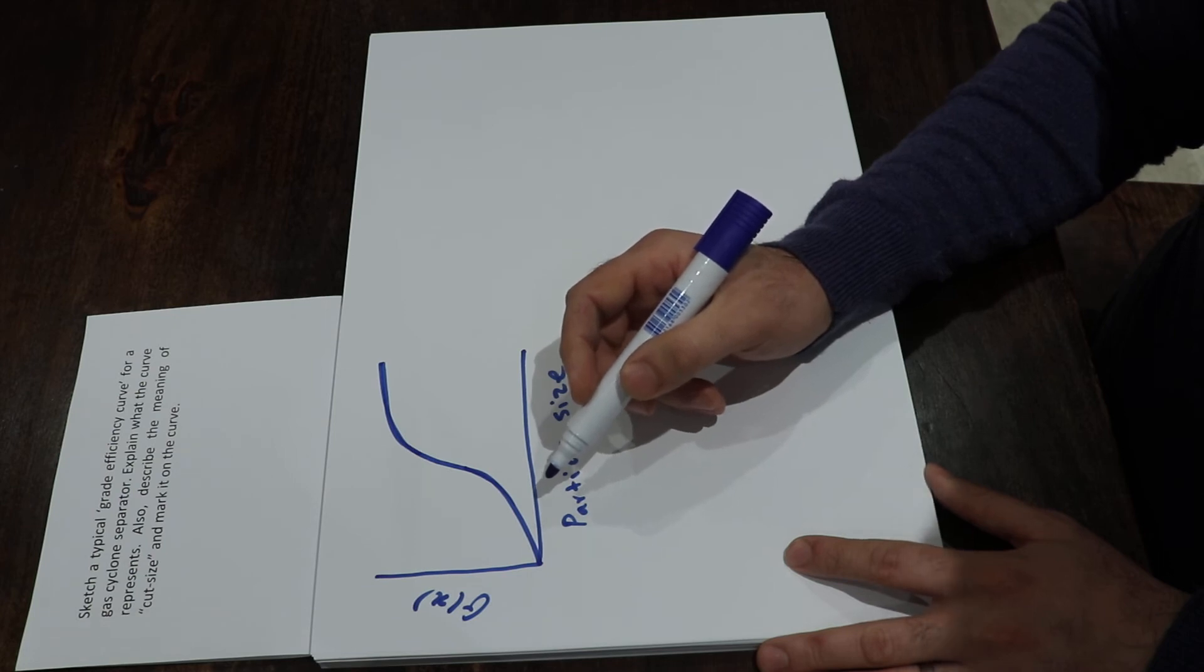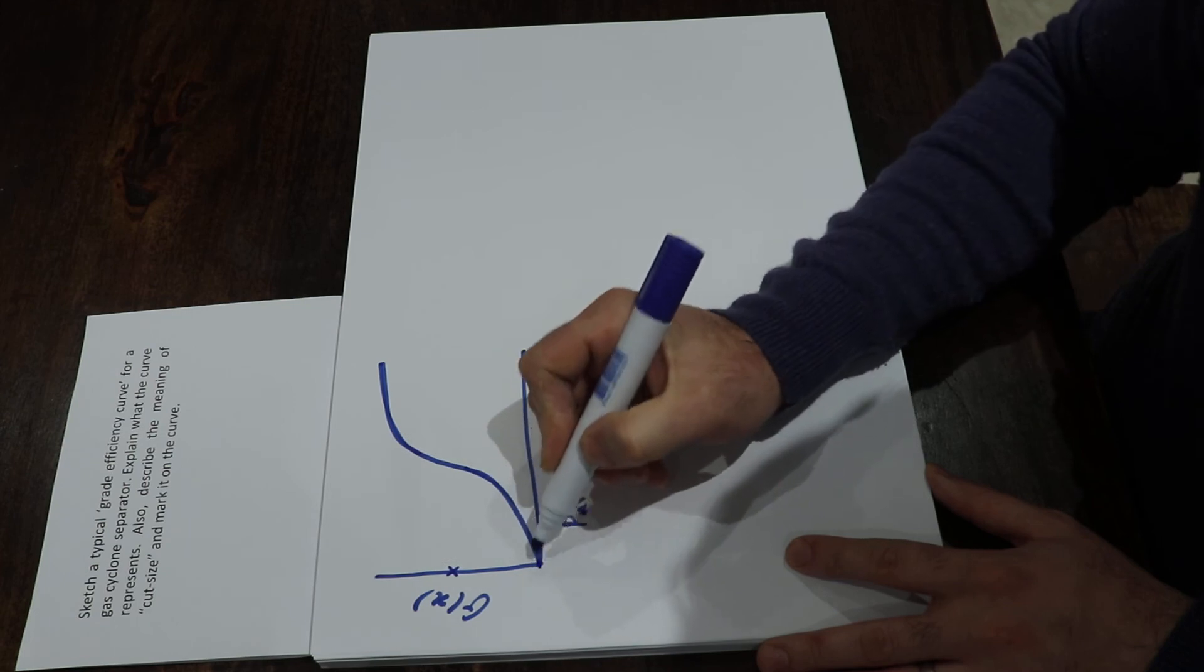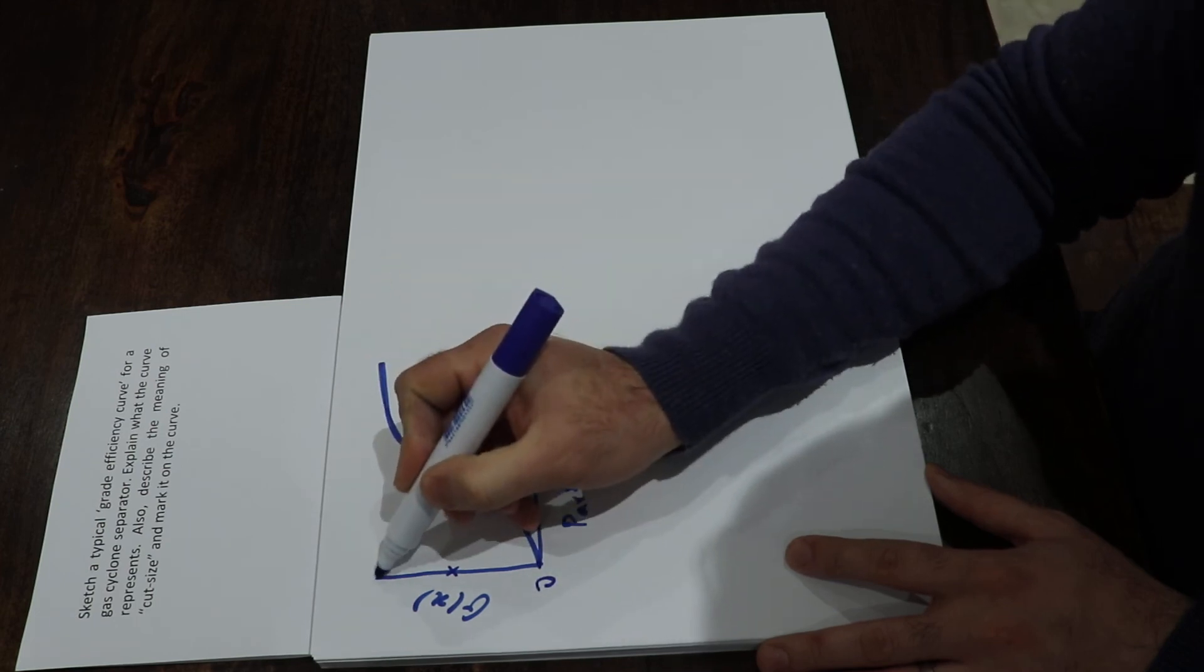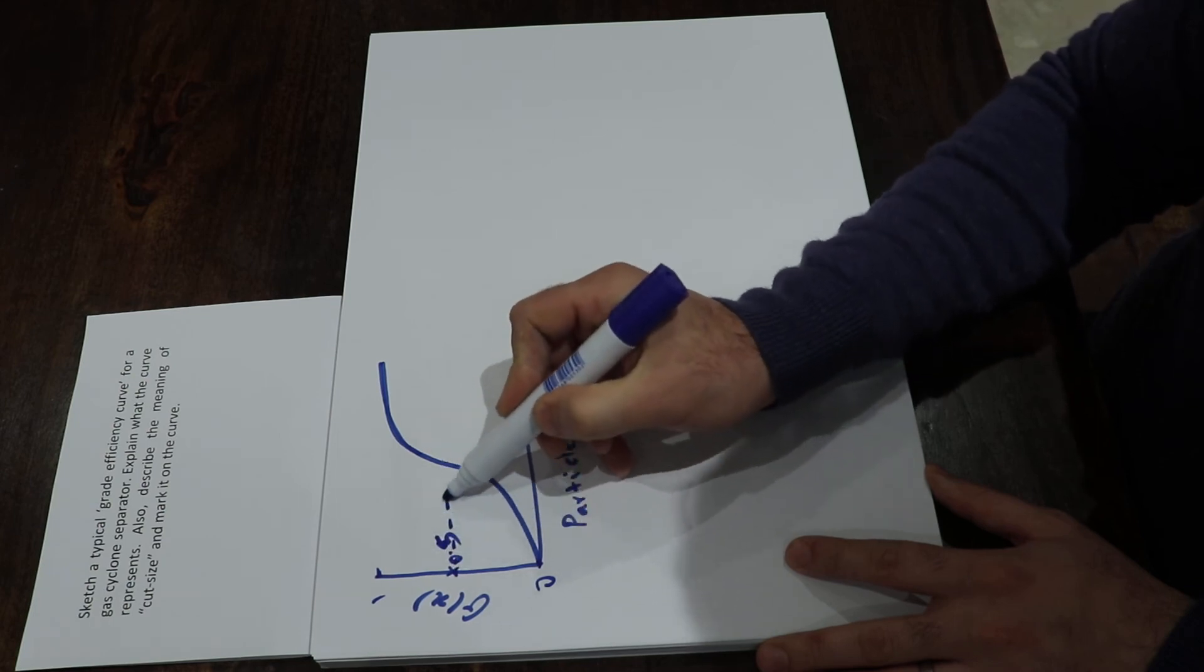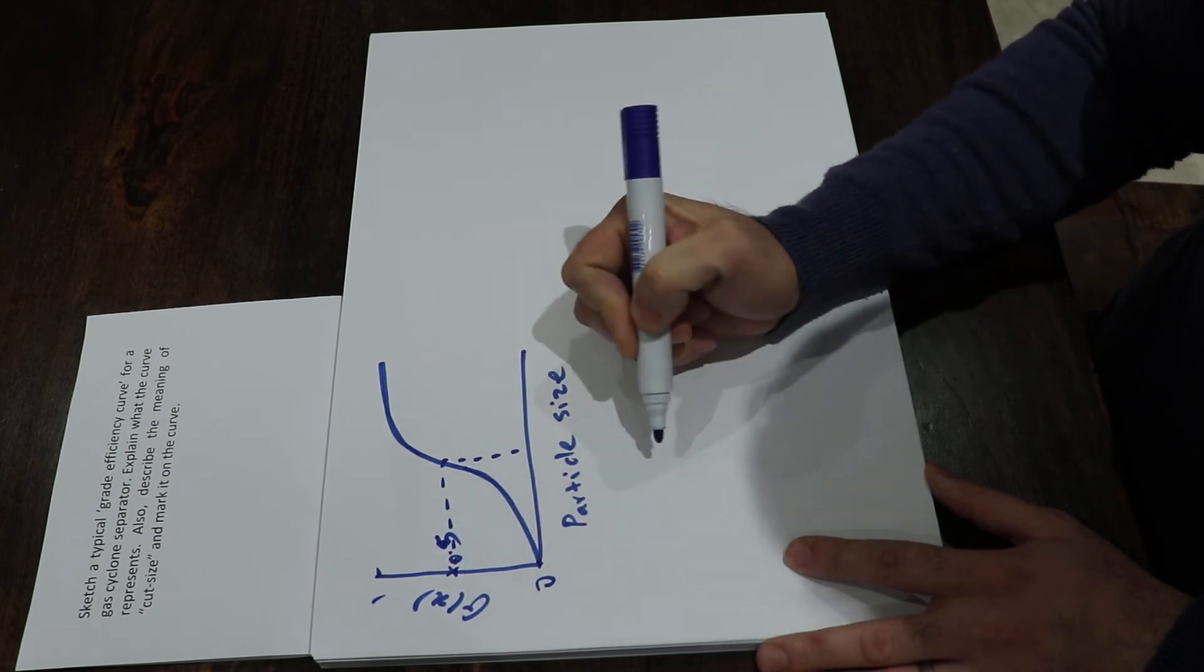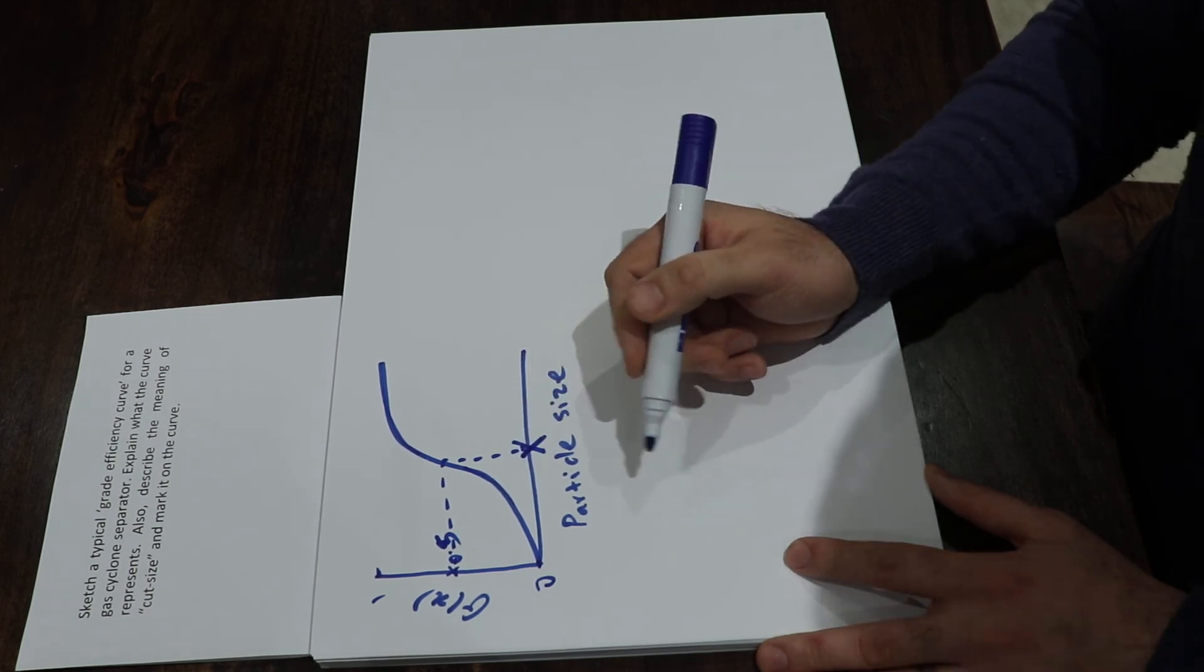size for which the grade efficiency is 50%. So let's say here that is zero, this is one, this is 0.5. The particle size for which the grade efficiency is 50%, that particle size is called